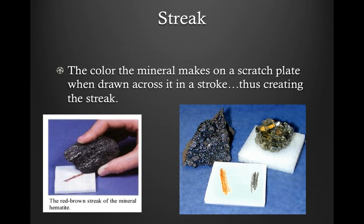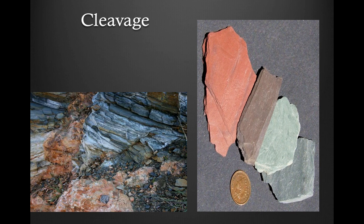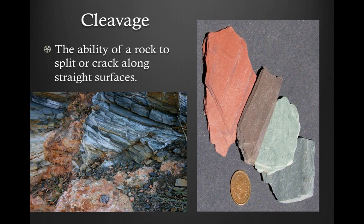Streak is a property we'll explore in an upcoming lab. It's basically using a rock like a colored pencil — you draw it across what's called a scratch plate and the color left behind is the streak. What's interesting is the streak color can be different from the rock's actual color. For example, a darker rock might have a gold streak, and a gold-colored rock might have a grayish-black streak. Don't be fooled by the rock's color — the streak can be quite different.